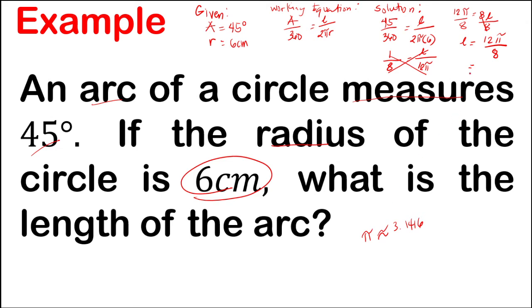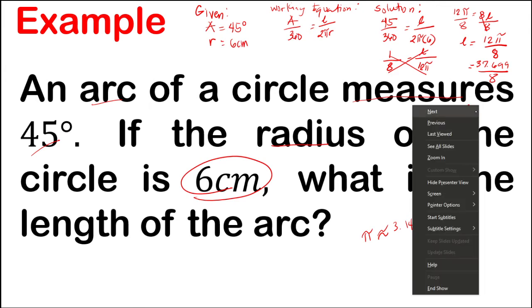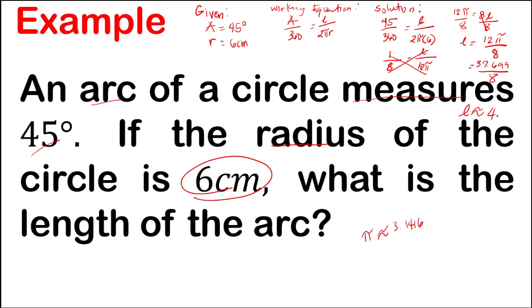Or if you want to directly use it using your calculator, you may. So that is 12 pi is approximately 37.699. So that is 37.699 divided by 8. And that is, the arc length is approximately 4.71. And do not forget your unit of measure, the unit of measure is centimeters. So therefore, the arc length is 4.71 centimeters.